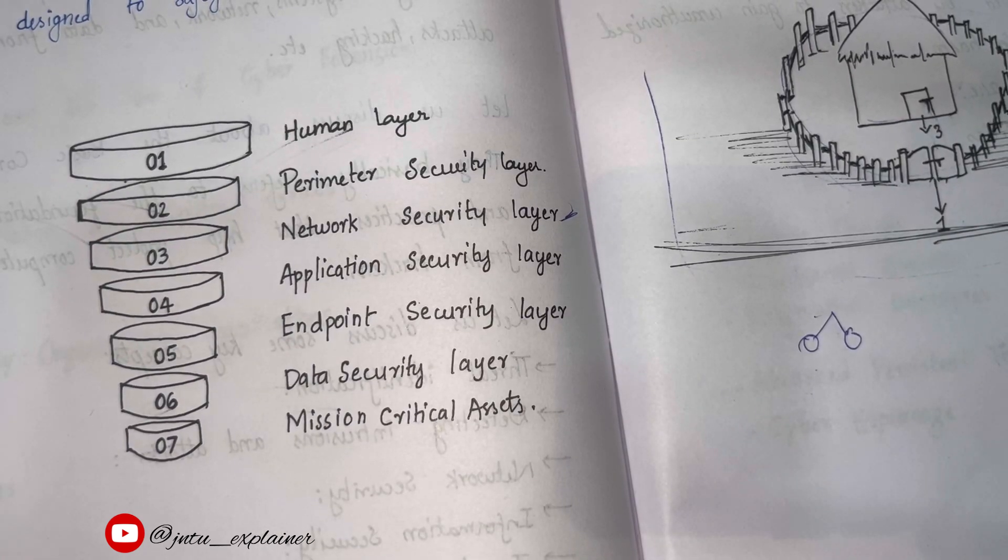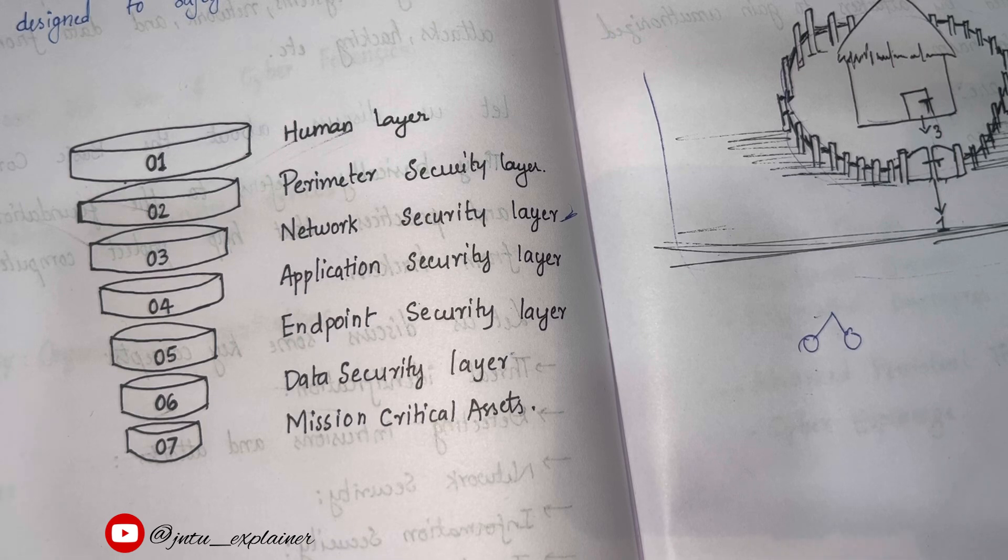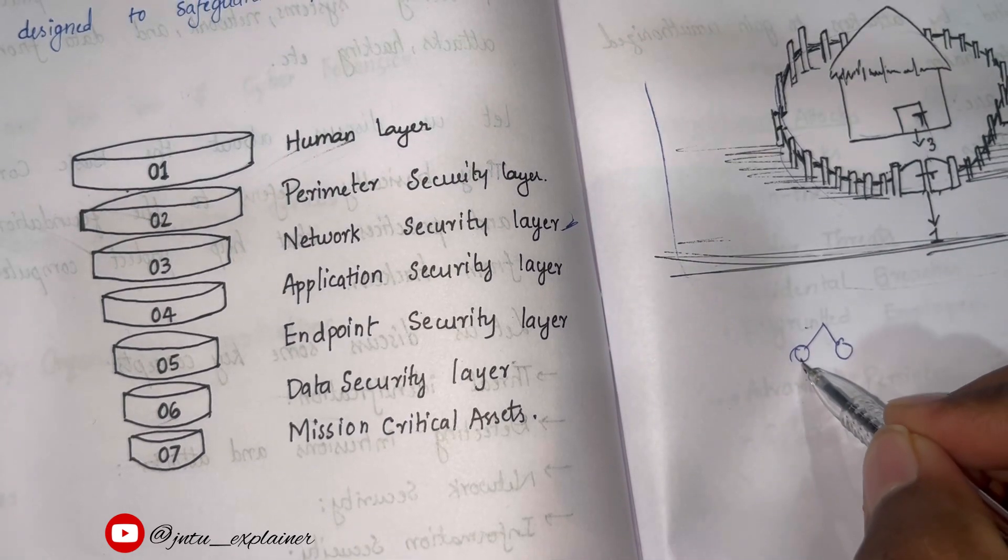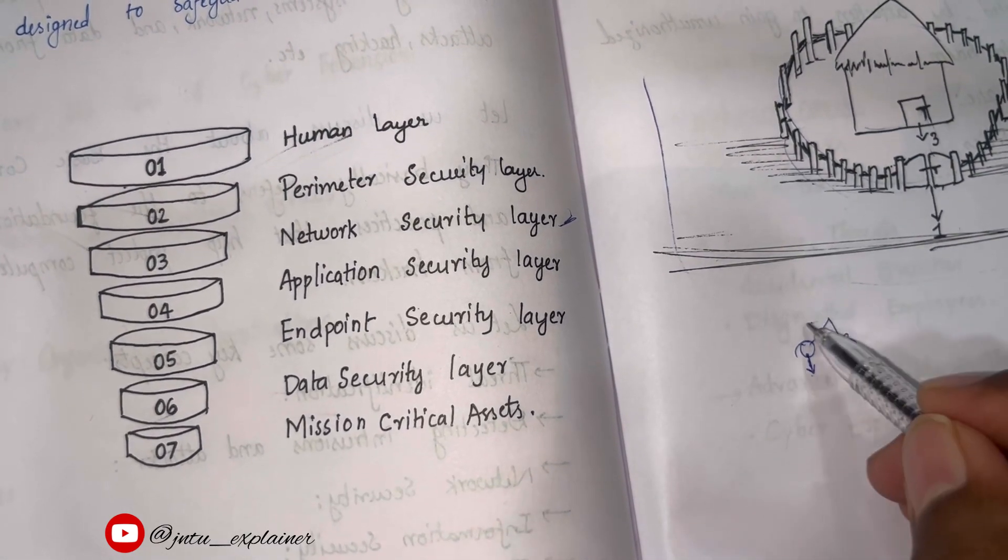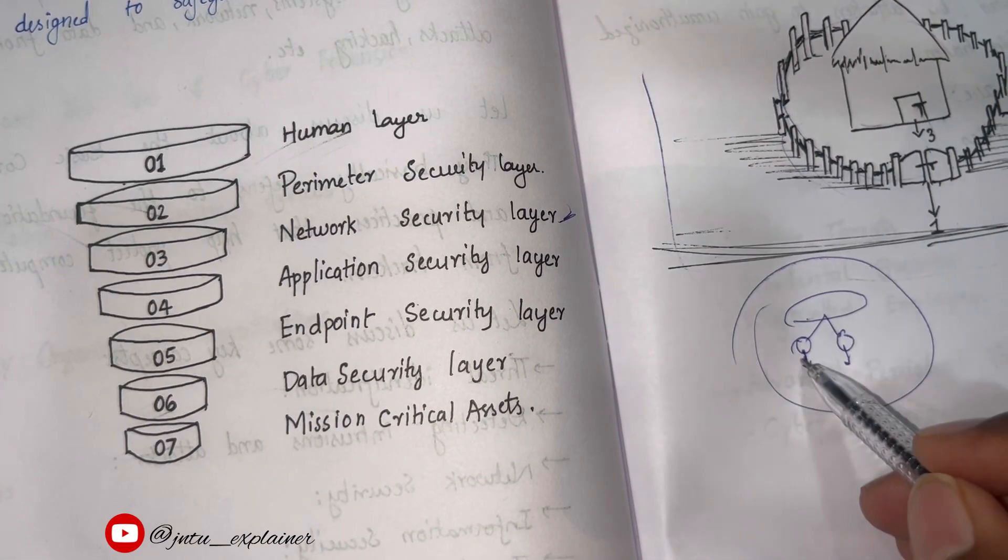Let's discuss the third layer, which is network security layer. Network security layer basically tries to protect all the applications and all the devices which are connected to the network. This protects the communication between these two.